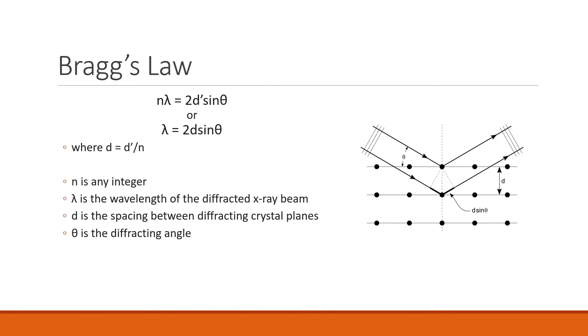Bragg's law helps us to define the relation between x-ray wavelengths and interatomic distance in crystal structures. So it's defined as nλ = 2d'sinθ, and it can be alternatively written as λ = 2dsinθ, where d = d'/n. Here n is any integer, λ is the wavelength of the diffracted x-ray beam shown here, d is the spacing between the diffracting crystal planes, and θ is the diffracting angle. As a side note, 2θ is more commonly used experimentally than just θ, so that's what we'll be using later on.